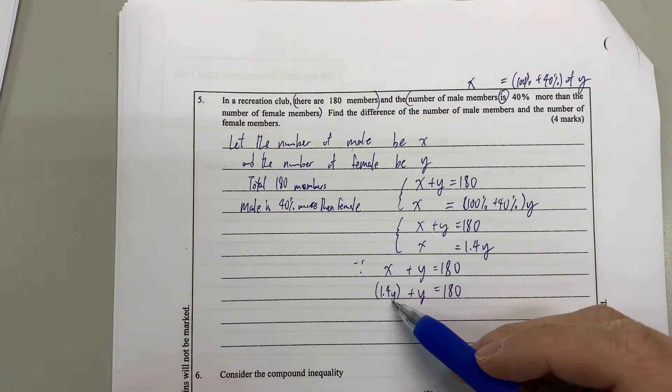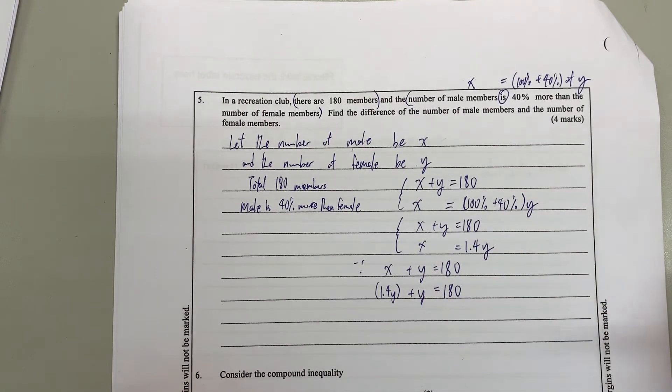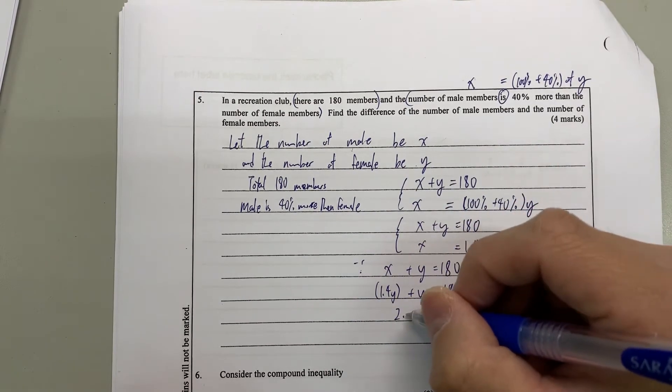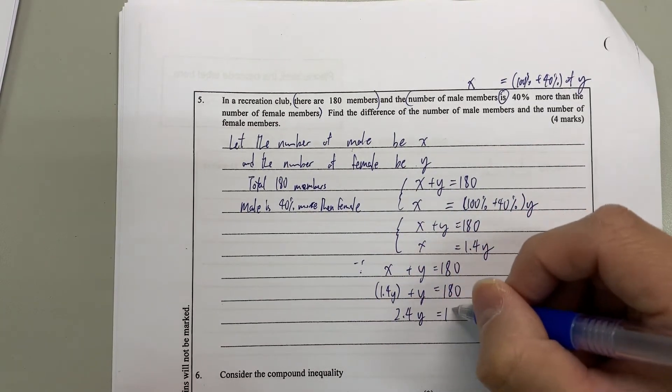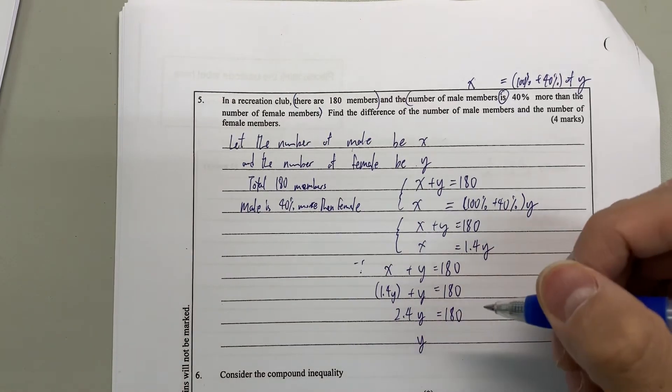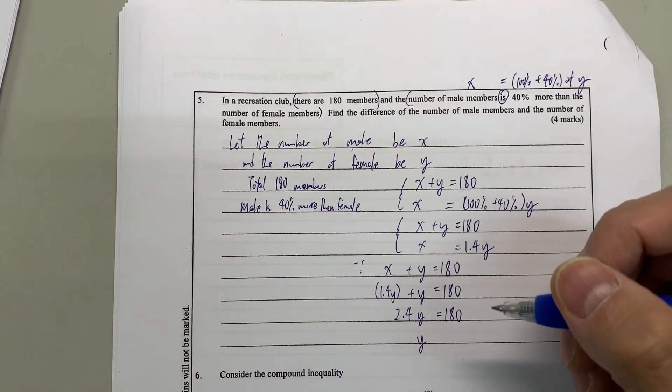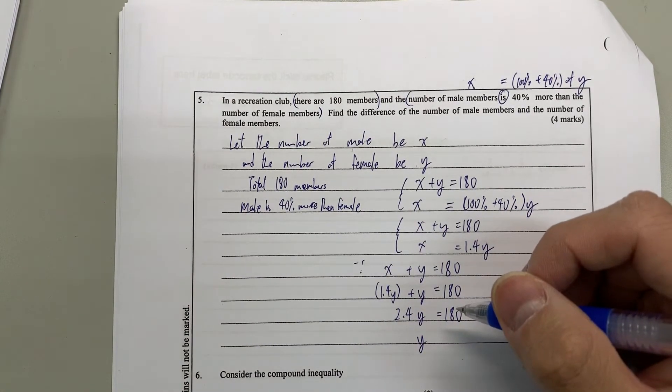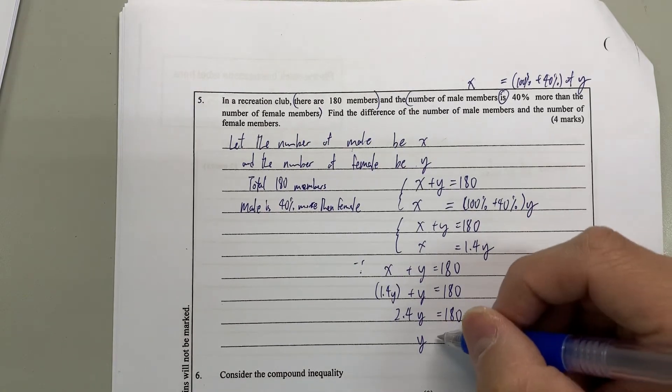So only y is the only unknown. Then we can solve y later. Before that, x and y together, we can't solve it. So 2.4y equals 180. And then y is 180 divided by 2.4. We got 75.